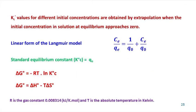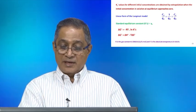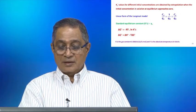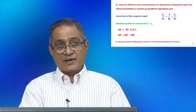The apparent equilibrium constant Kc′ values for different initial concentrations of the model compounds are obtained by extrapolation when the initial concentration of the model compound in solution at equilibrium approaches zero. This value is equal to the intercept of the linear form of the Langmuir model, given by CE divided by QE equals (1 divided by Q₀) plus (C divided by Q₀). Knowing the intercept of the linear form of the Langmuir curve, the standard equilibrium constant Kc° will be Q₀, as discussed earlier in the case of the Langmuir isotherm.